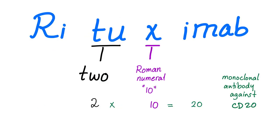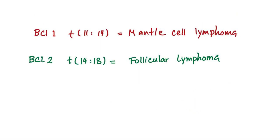A quick mnemonic: Rituximab — RiTUXimab — 'TUX' contains 'X', which in Roman numerals is 10. Two times 10 is 20. That's why Rituximab is a monoclonal antibody against CD20. Also, pay close attention: BCL1 overexpression due to translocation between chromosomes 11 and 14 is mantle cell lymphoma; BCL2 overexpression due to translocation between chromosomes 14 and 18 is follicular lymphoma. Do not confuse both of them — very important.